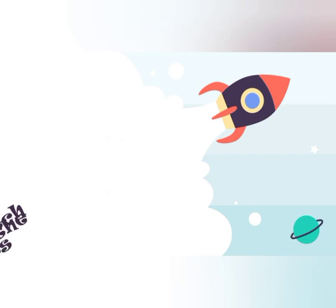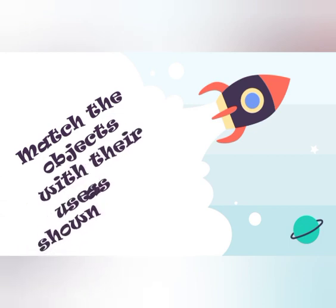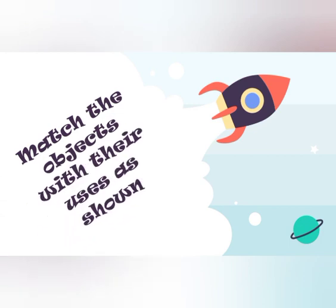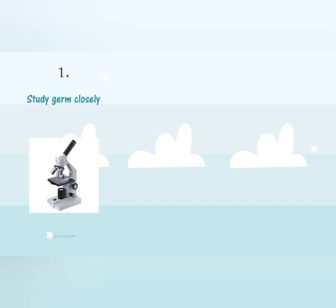Match the objects with their uses as shown. We will see the uses and match the object with the name. First — study germs closely. This instrument is used to study germs. Germs we cannot see by our eyes directly, so this instrument is very useful to study germs. Its name is microscope.